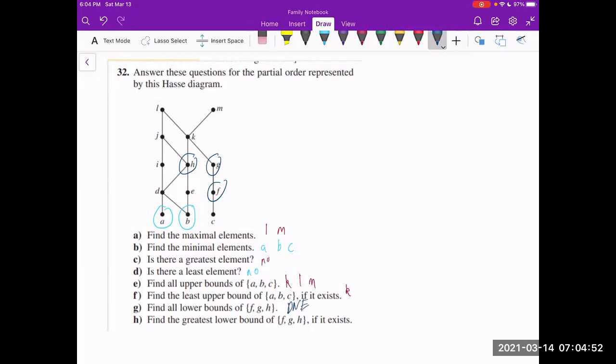And for finding the greatest lower bound, well, if there is no lower bound of F, G, and H, there can't be a greatest lower bound, right? So this means that this is also not going to exist.